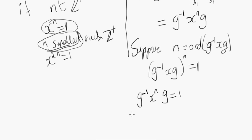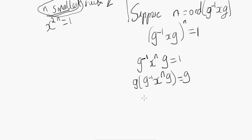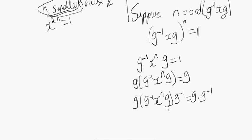From our trick, we saw that g⁻¹xg to the n is the same as g⁻¹ x to the n g. So we can rewrite our equation as g⁻¹ x to the n g equals 1. Since this is an equation, we can multiply both sides: multiply on the left by g, and on the right by g⁻¹. We get g times g⁻¹, which is 1, then x to the n, then g times g⁻¹, which is also 1. So we end up with x to the n equals 1. So this n actually works — x to the n actually equals 1.